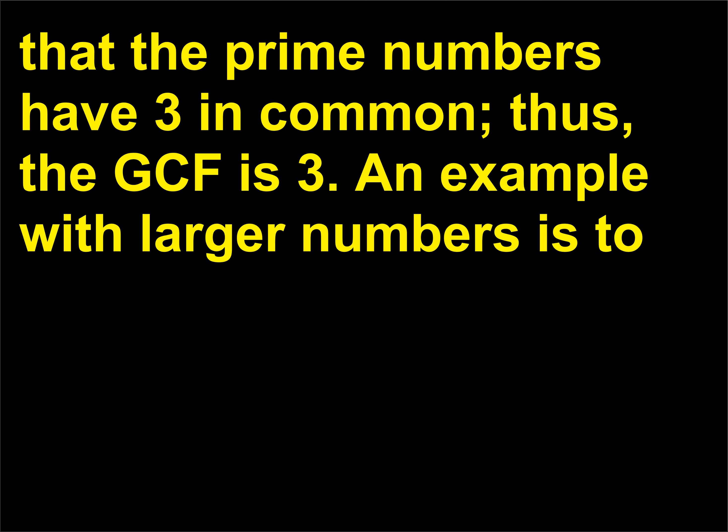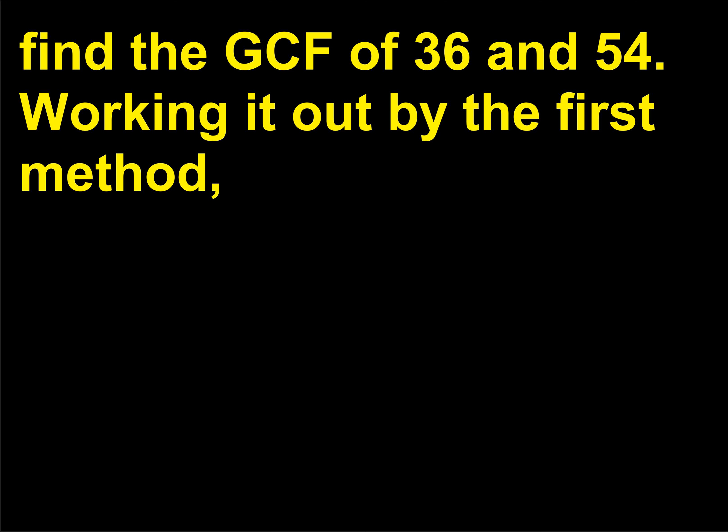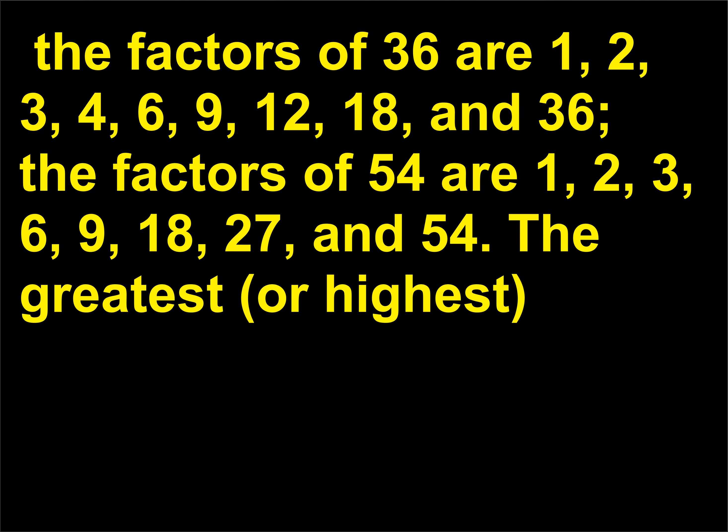An example with larger numbers: find the GCF of 36 and 54. Working it out by the first method, the factors of 36 are 1, 2, 3, 4, 6, 9, 12, 18, and 36. The factors of 54 are 1, 2, 3, 6, 9, 18, 27, and 54.